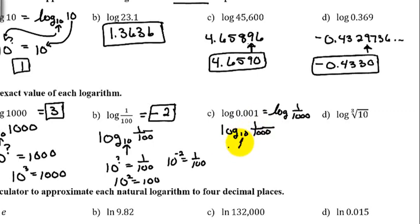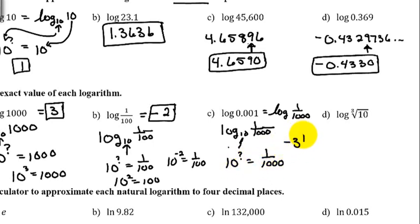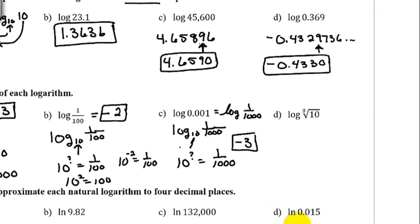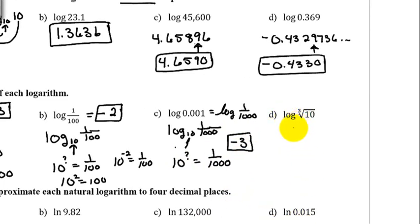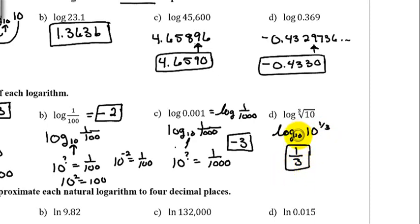For log of 1/1000, it's going to be negative because that's how you get it into the denominator, and 1000 is 10 cubed, so the answer is negative 3. The last example is log of the cube root of 10. This is log base 10, and the cube root of 10 can be rewritten as 10 to the 1/3 power. The power you raise the base to in order to get 10 to the 1/3 is 1/3.